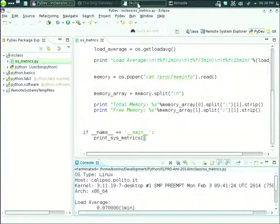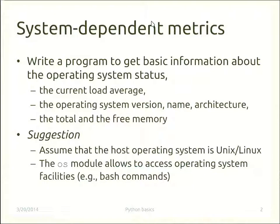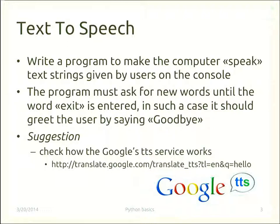Let's try something a little bit more exciting: text-to-speech. We want to write a program that takes some text on the console and speaks it aloud. You might think this is a big step, but actually it's quite simple. There is a hidden service provided by Google that, given a string, returns an mp3 file with the string's pronunciation. If we type a specific URL — `translate.google.com/translate_tts` — in the browser, we get back the spoken pronunciation.